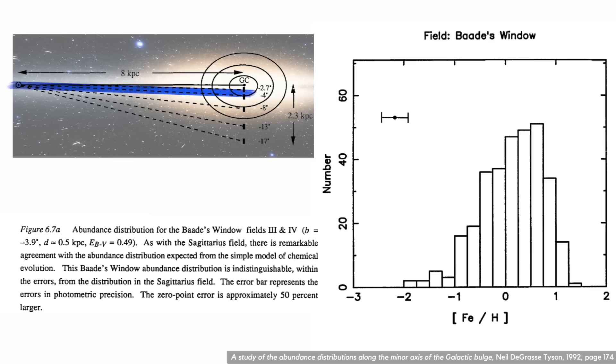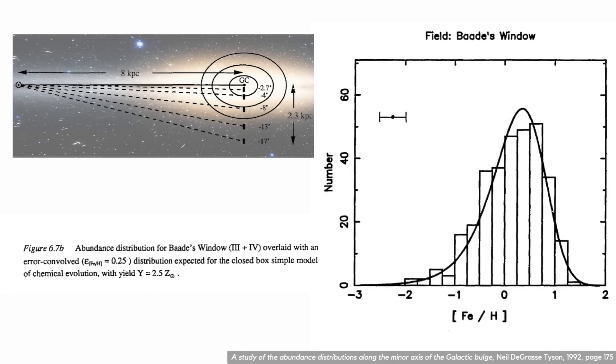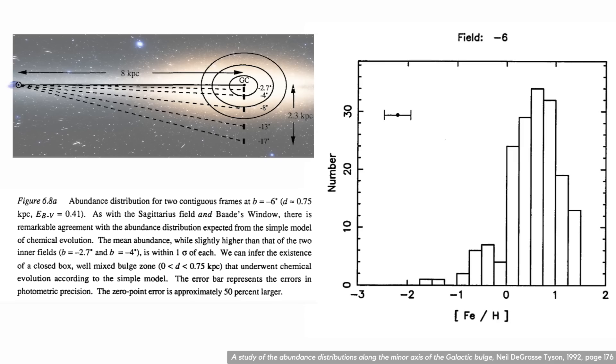Going out further from the galactic center, his next plot has the same shape but has shifted slightly to the right. The error bars are quite large and he says that this also fits the simple model but with a higher yield. The third plot, moving further out again, has a higher average abundance, but he concludes that so far the region from the galactic center to 0.75 kiloparsecs away is a well mixed closed box. A parsec is a unit of distance, but if you're more familiar with light years, then this closed box region is about 5000 light years across.